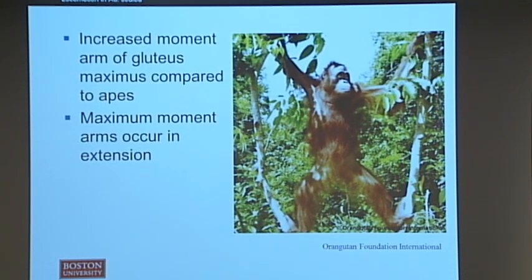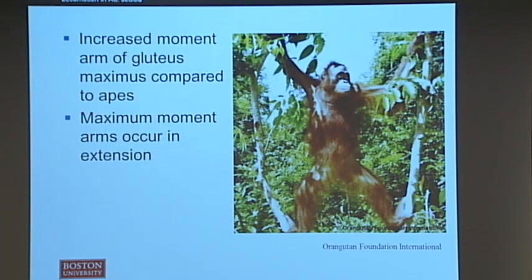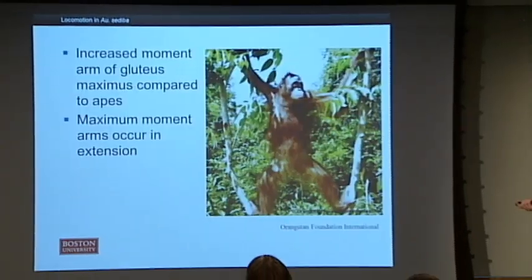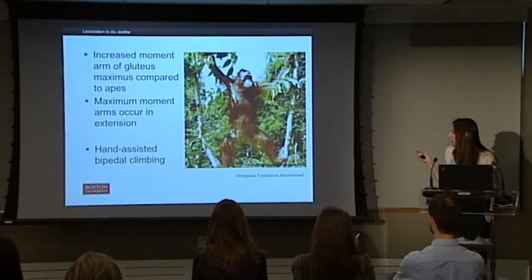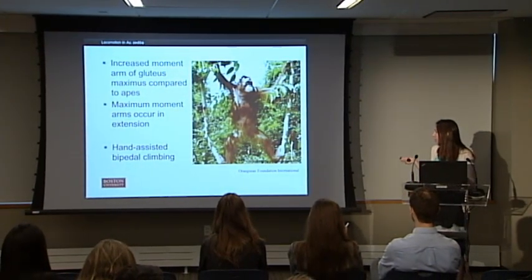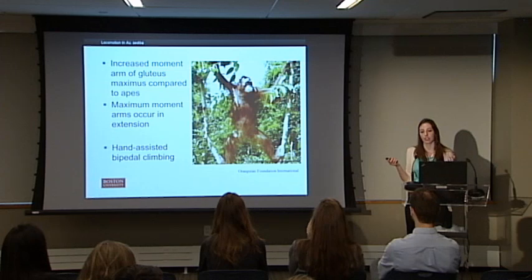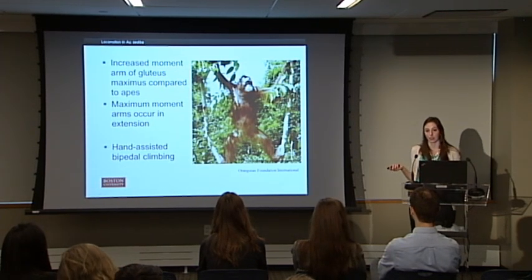We also found an increase in the moment arms of gluteus maximus — the superficial muscle on your butt — and that the maximum moment arms of most muscles occurred in extension rather than flexion. These findings indicate that while sediba was probably climbing, she wasn't climbing like modern apes do in vertical climbing. Rather, we think she was moving in a form called hand-assisted bipedal climbing, similar to how a rock climber moves — extending arms above the head, pulling up, and extending legs beneath.